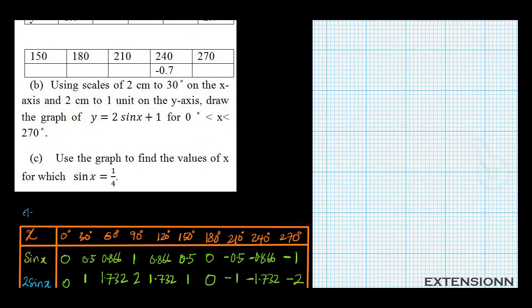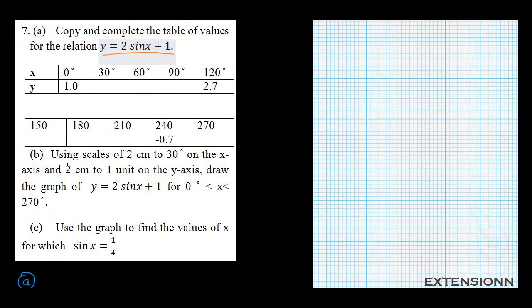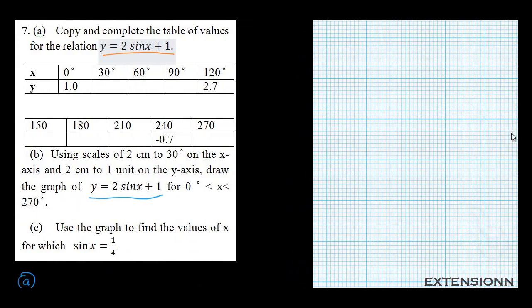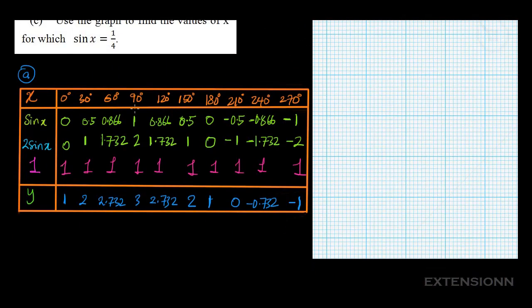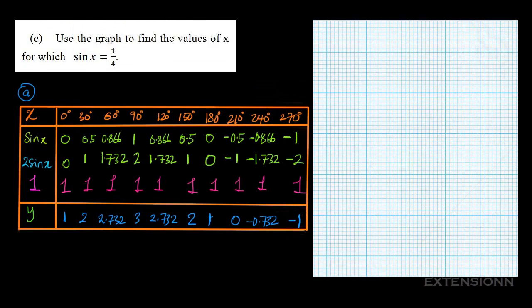For the next question: using scales of 2 cm to represent 30 degrees on the x-axis and 2 cm to represent 1 unit on the y-axis, draw the graph of y equals 2 sin x plus 1 for 0 degrees less than x less than 270 degrees. The scale helps our values fit the graph paper. We'll take the values of x and y and use them to draw the graph.